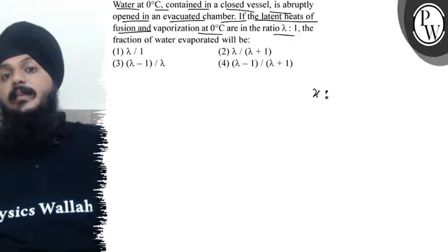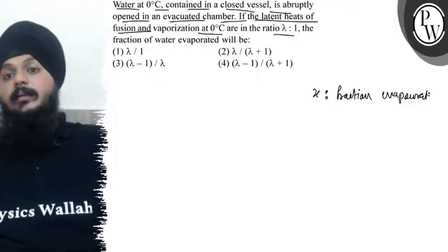Let us see an example. Suppose x is the fraction that is evaporated, and 1 minus x will remain fixed.